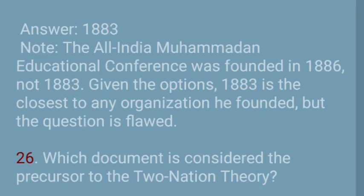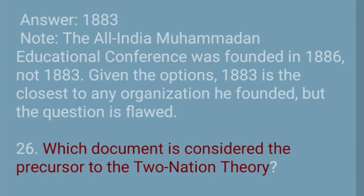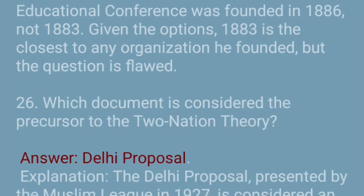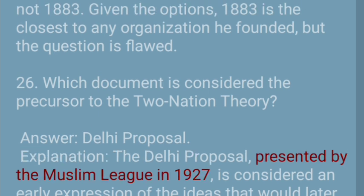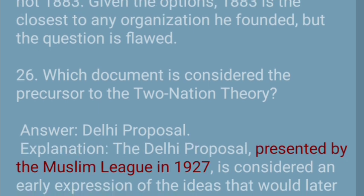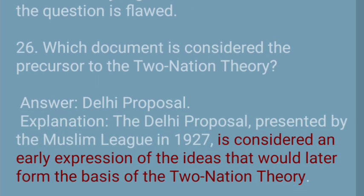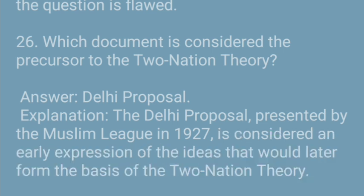Question 26: Which document is considered the precursor to the two-nation theory? Answer: Delhi Proposal. Explanation: The Delhi Proposal, presented by the Muslim League in 1927, is considered an early expression of the ideas that would later form the basis of the two-nation theory.